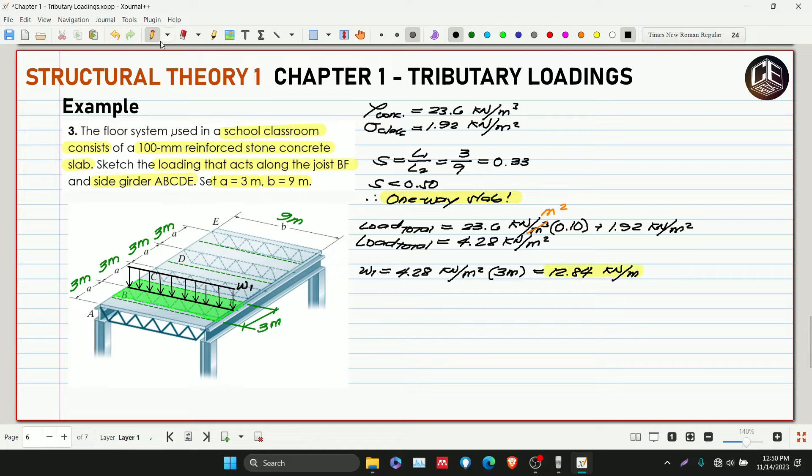Our W1 is 12.84 kilonewton per meter, and this is the loading we're looking for on our joist BF. For our beam ABCDE, we need the reactions from our joist. Let's draw the joist. These are the joists with simply supported conditions, one pin and one roller support.